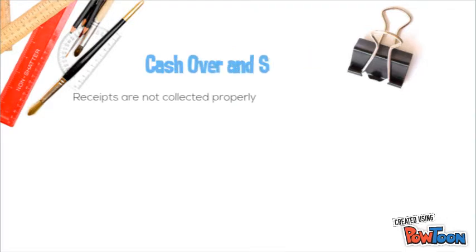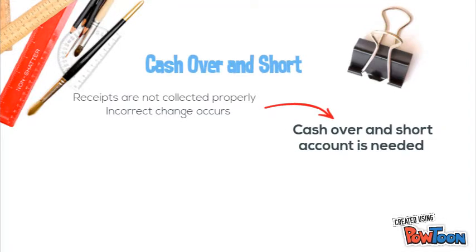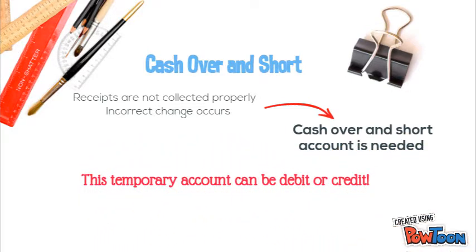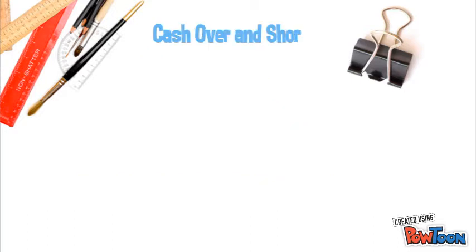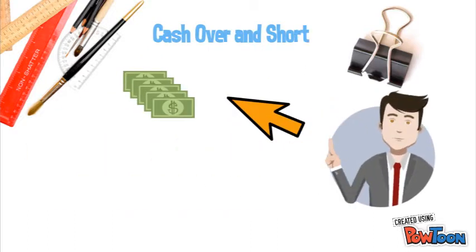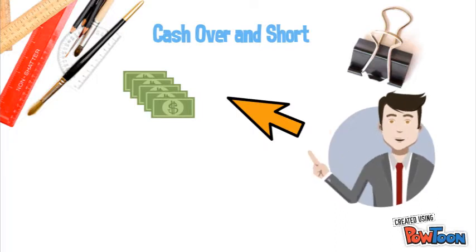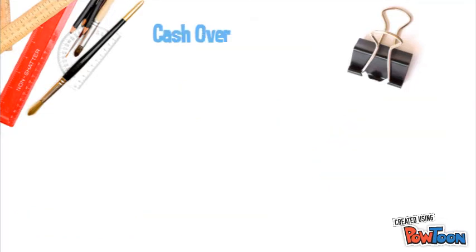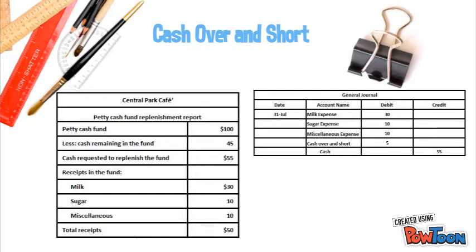Sometimes, when receipts are not collected properly or incorrect change occurs, a temporary cash over and short account is needed. This account may have a debit or credit balance depending on the situation. In this example, Ted receives an incorrect change of $5 while buying milk for the cafe. Therefore, this $5 will result in the cash over and short account. If the total amount of the expense is greater than the amount needed to replenish the fund, the cash over and short account is credited. But in this case, the cash over and short account is debited, as the amount necessary to replenish the fund is greater than the expenditures.